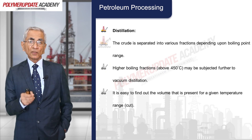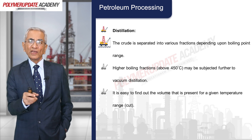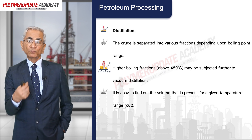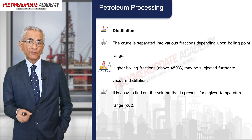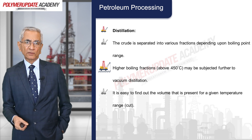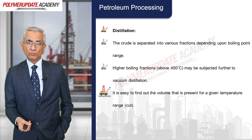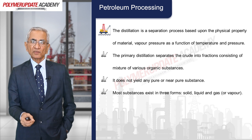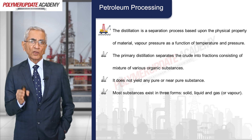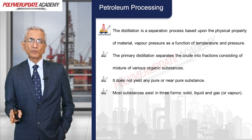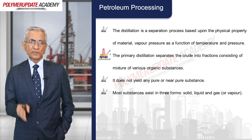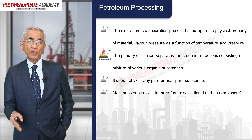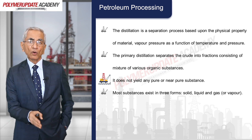The next very important operation is distillation. The crude is separated into various fractions depending upon the boiling point range. Higher boiling point fractions above about 450°C may be subjected further to vacuum distillation. Distillation is a separation process based upon the physical property of vapor pressure as a function of temperature and pressure. The primary distillation separates the crude into fractions consisting of mixtures of various organic materials — it does not yield any pure or near-pure substance.